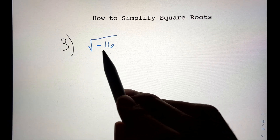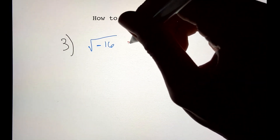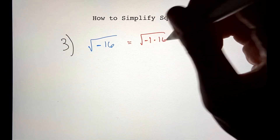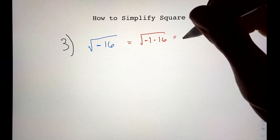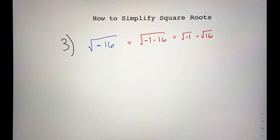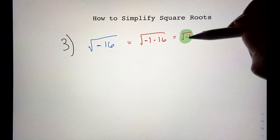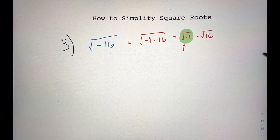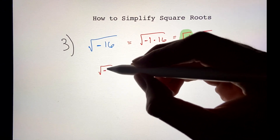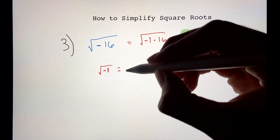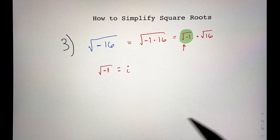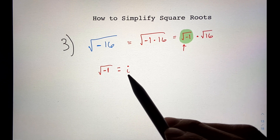This one is the square root of negative 16. I'm going to use the same technique and rewrite negative 16 as the square root of minus 1 times 16, then decompose it as the square root of minus 1 times the square root of 16. This is a good time to talk about the square root of negative 1 — mathematicians defined it as the imaginary number i. Every time you see the square root of negative 1, you can just replace it with i.